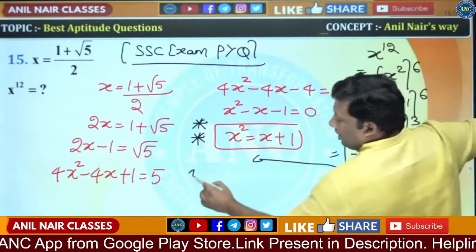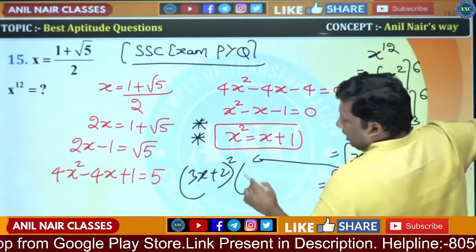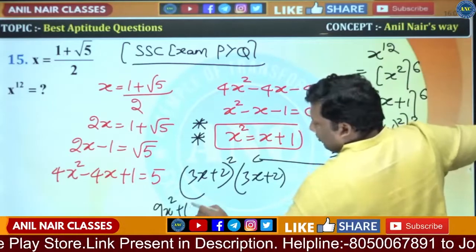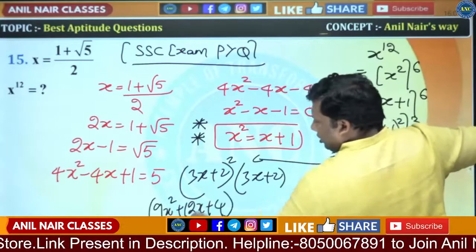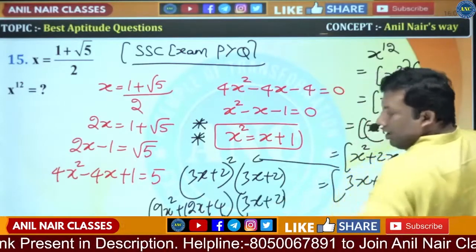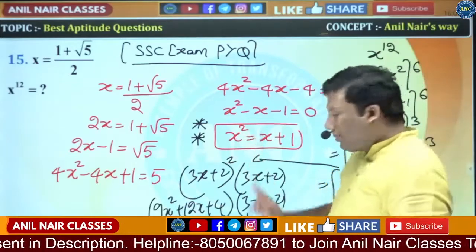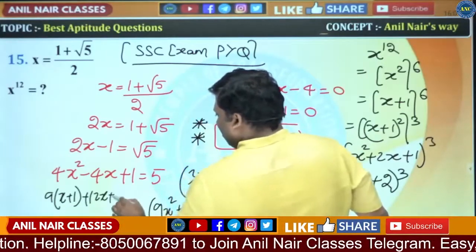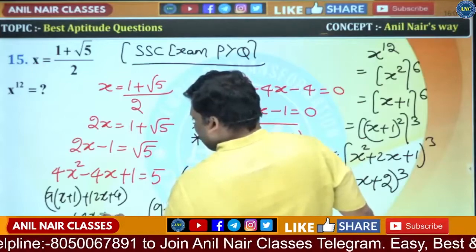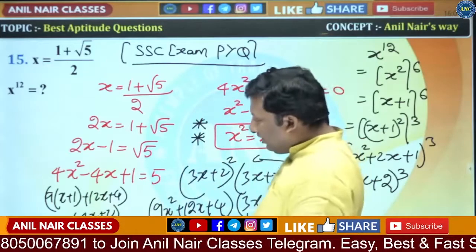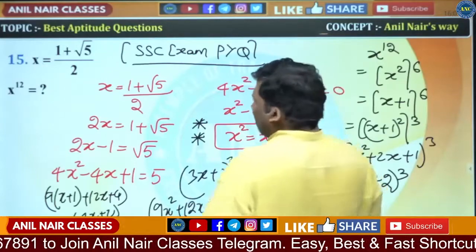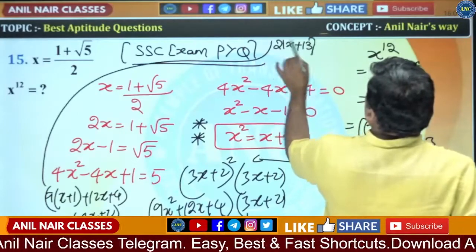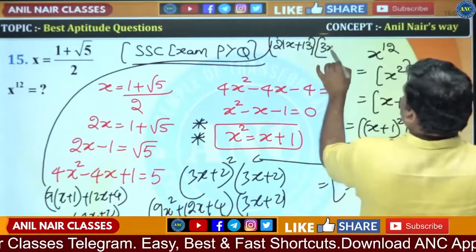(3X + 2)³ = (3X + 2)² × (3X + 2). Expanding (3X + 2)² gives 9X² + 12X + 4. Multiplying by (3X + 2). Wherever X² appears, substitute X + 1: so 9(X+1) + 12X + 4 = 9X + 9 + 12X + 4 = 21X + 13. So this becomes (21X + 13)(3X + 2).